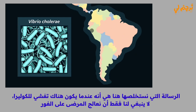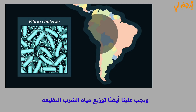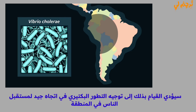The take-home message here is this: when there is an outbreak of cholera, not only should we immediately treat the sick, we should also distribute clean drinking water. Doing so will guide the bacteria's evolution in a direction that's good for the future of the people in the area.